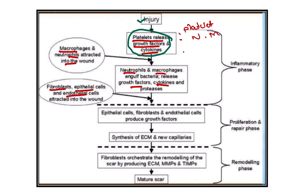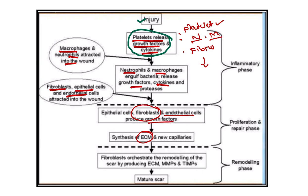Then fibroblasts, epithelial cells, and other cells arrive. Fibroblasts and endothelial cells produce growth factors, and finally extracellular matrix formation, new capillary formation, and a mature escar develops. Platelets have different types of granules such as alpha granules and others, responsible for different activities. Then neutrophils and macrophages come, followed by fibroblasts releasing different types of collagen material, and finally extracellular matrix and blood vessel formation.